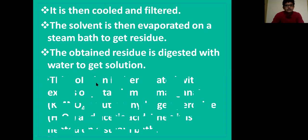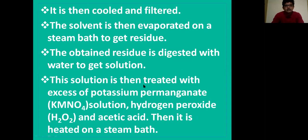This solution is then treated with excess of potassium permanganate solution, hydrogen peroxide and acetic acid. Then it is heated on a steam bath.